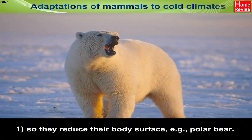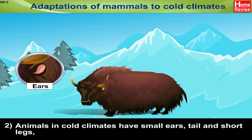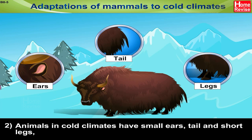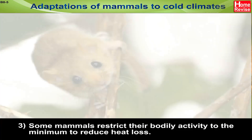Animals in cold climates have small ears, tail and short legs. As the extreme portions of the body like ears, tail and feet, paws or hooves lose heat first.